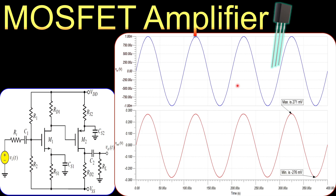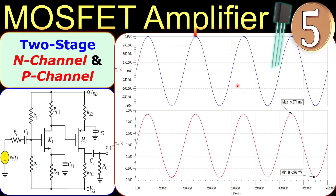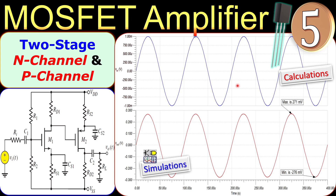Hi everyone and welcome to a new video about MOSFET amplifiers. This is example number five. In this example, I will discuss again the two-stage amplifier, using one N-channel and one P-channel MOSFET, both of the enhancement type. We will look at the calculations for this specific circuit step by step and also verify these in SPICE simulations.